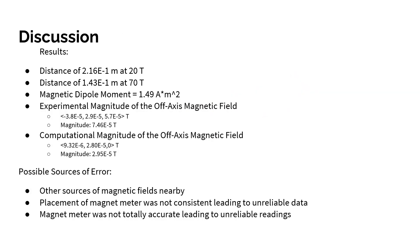The results of our lab: the distance of our magnetometer at 20 teslas was 2.16 times 10 to the negative 1 meters. The distance of our magnetometer when it measured 70 teslas was 1.43 times 10 to the negative 1 meters. As stated before, our magnetic dipole moment came out to be 1.49 amp·meters squared.